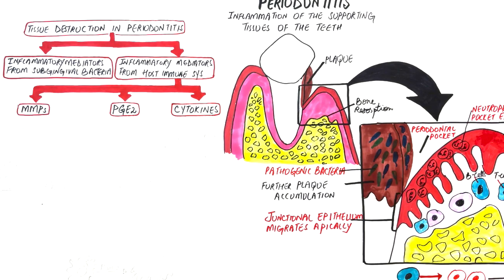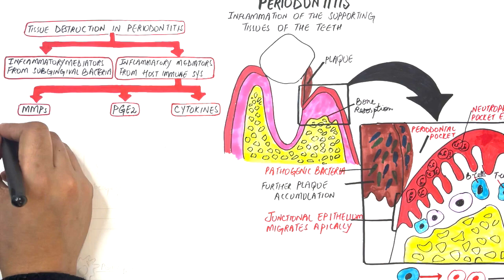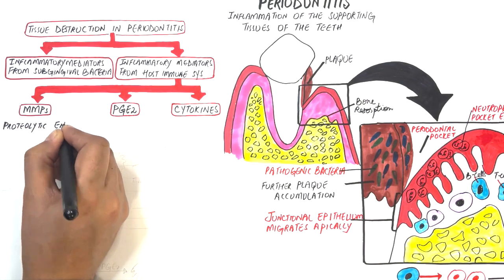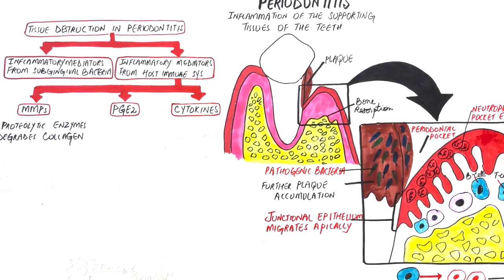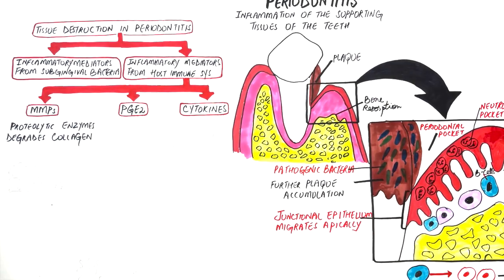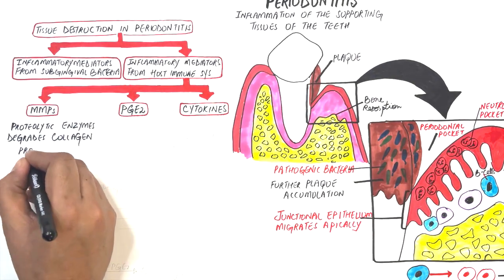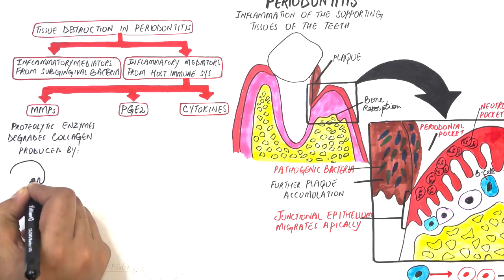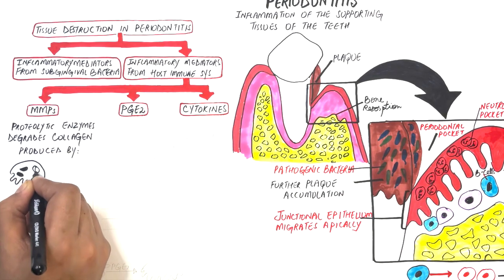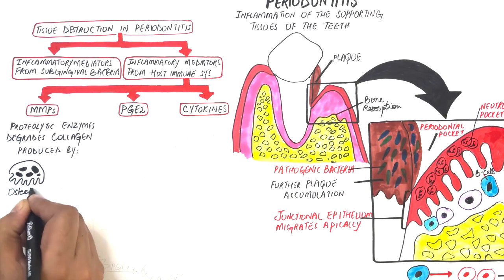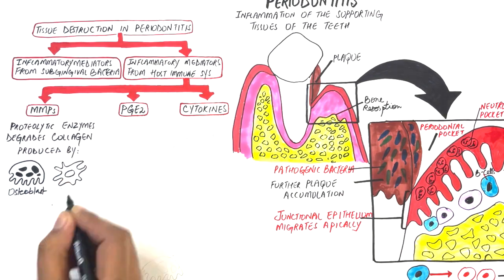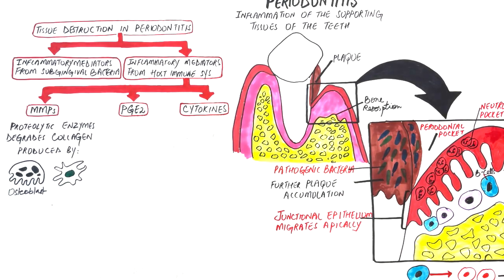Matrix metalloproteinases or MMPs are proteolytic enzymes or collagenases that degrade collagen fibers of the periodontium. In this advanced lesion, these MMPs are produced by osteoclasts and fibroblasts.